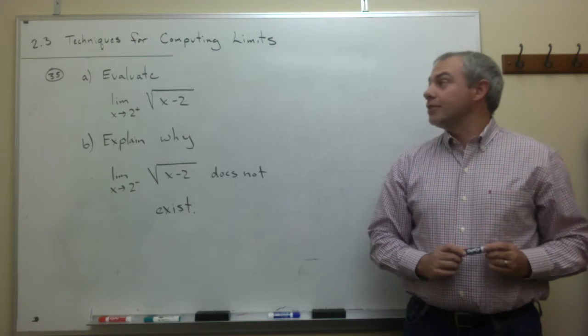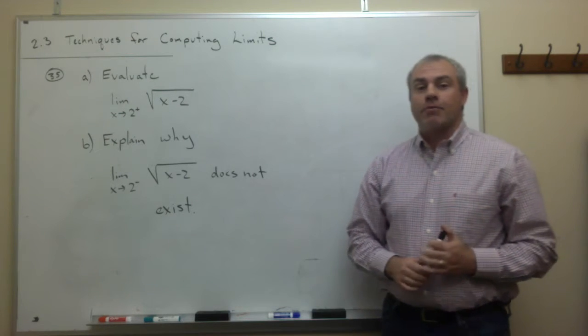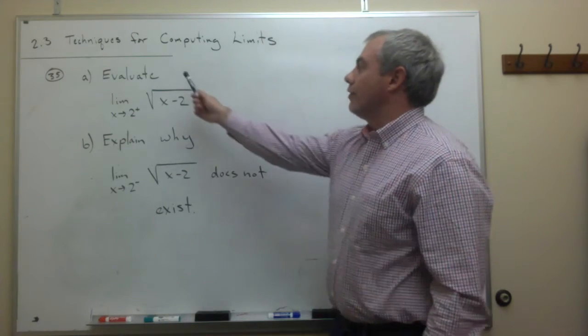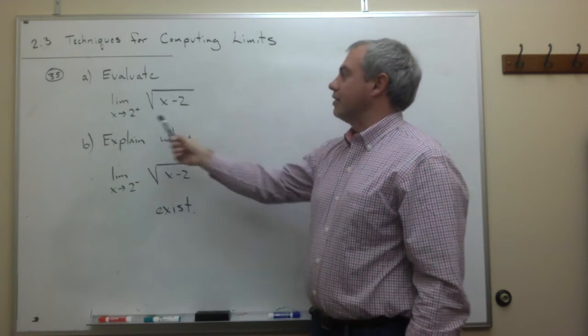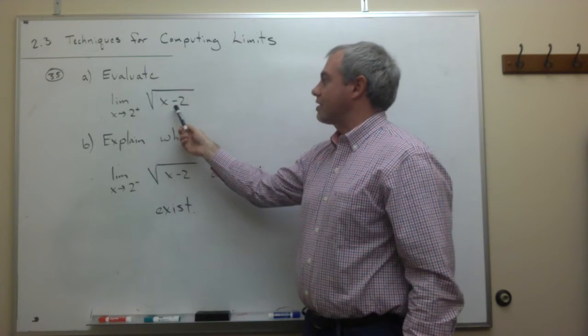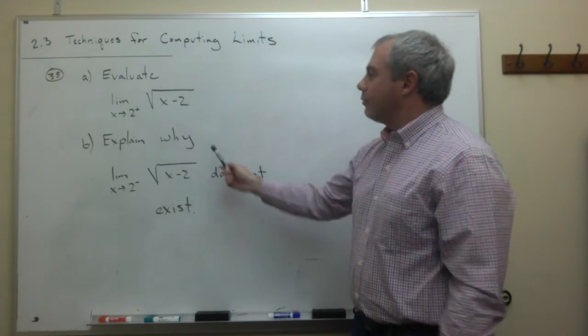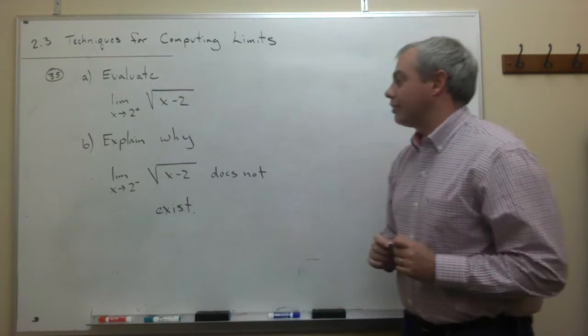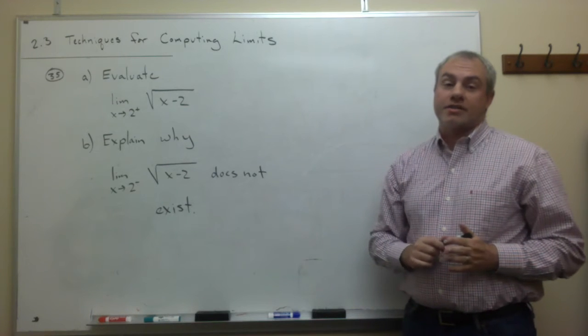Now let's look at problem number 35, and problem number 35 has two parts to it. We want to evaluate this limit, the limit as x goes to 2 from the right of the square root of x minus 2, and then we also want to explain why the limit as x goes to 2 from the left of the square root of x minus 2 does not exist.